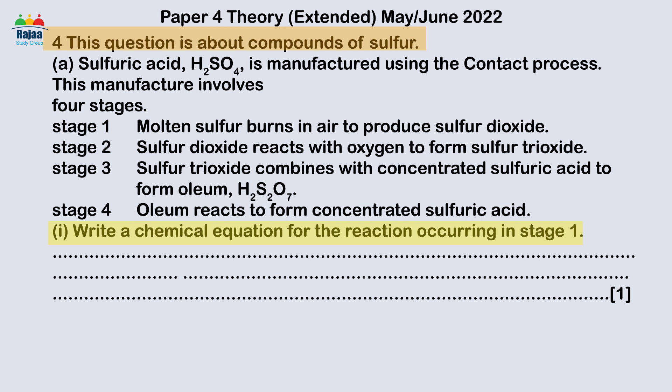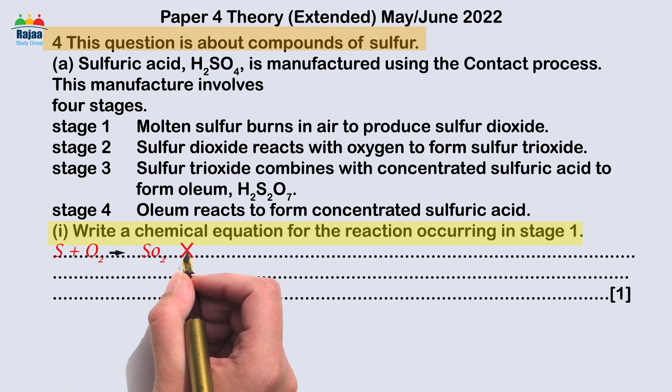How would you write a chemical equation for the first stage reaction A(i)? This was very well answered. The majority of errors occurred when students were writing formulas.